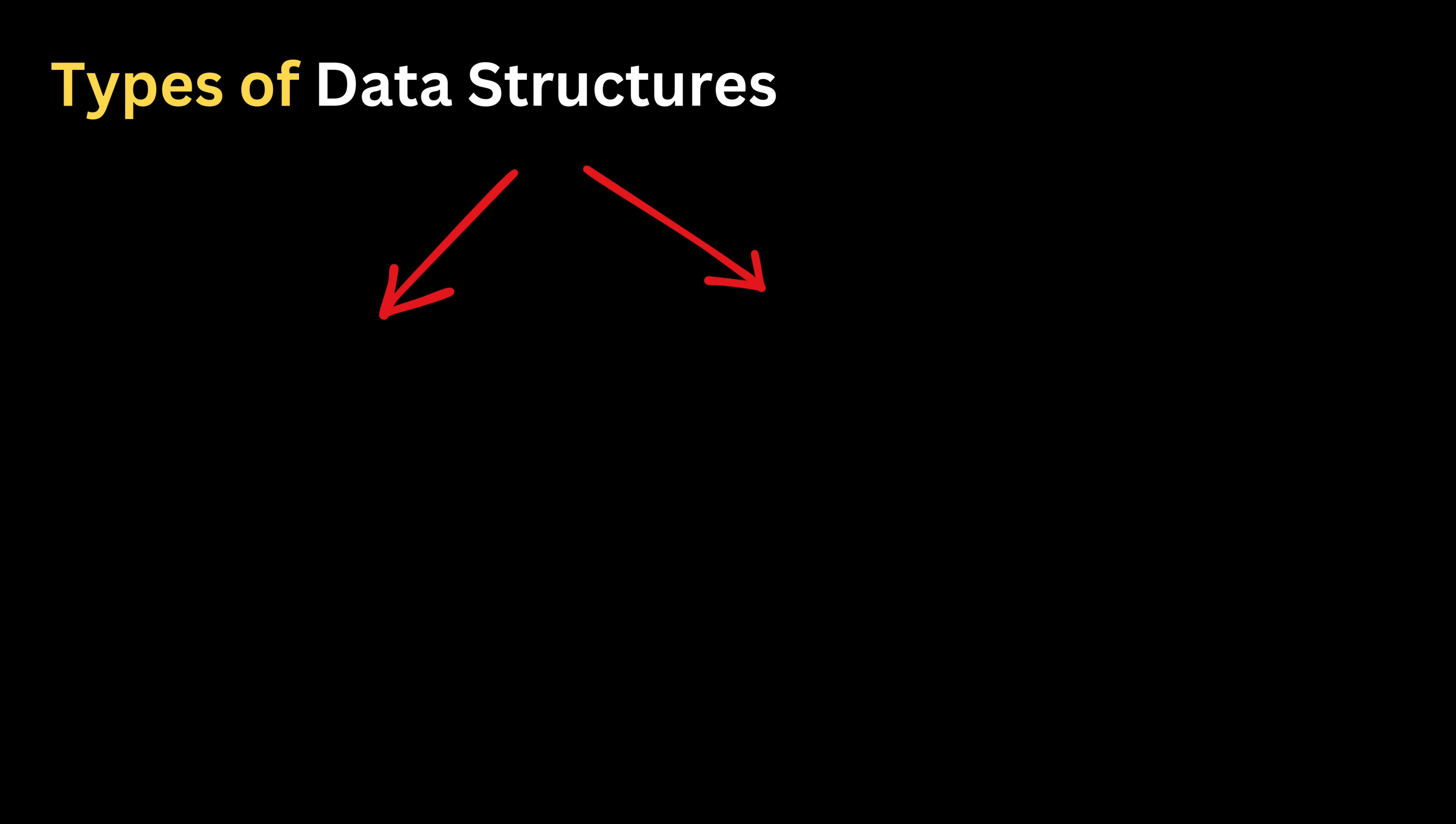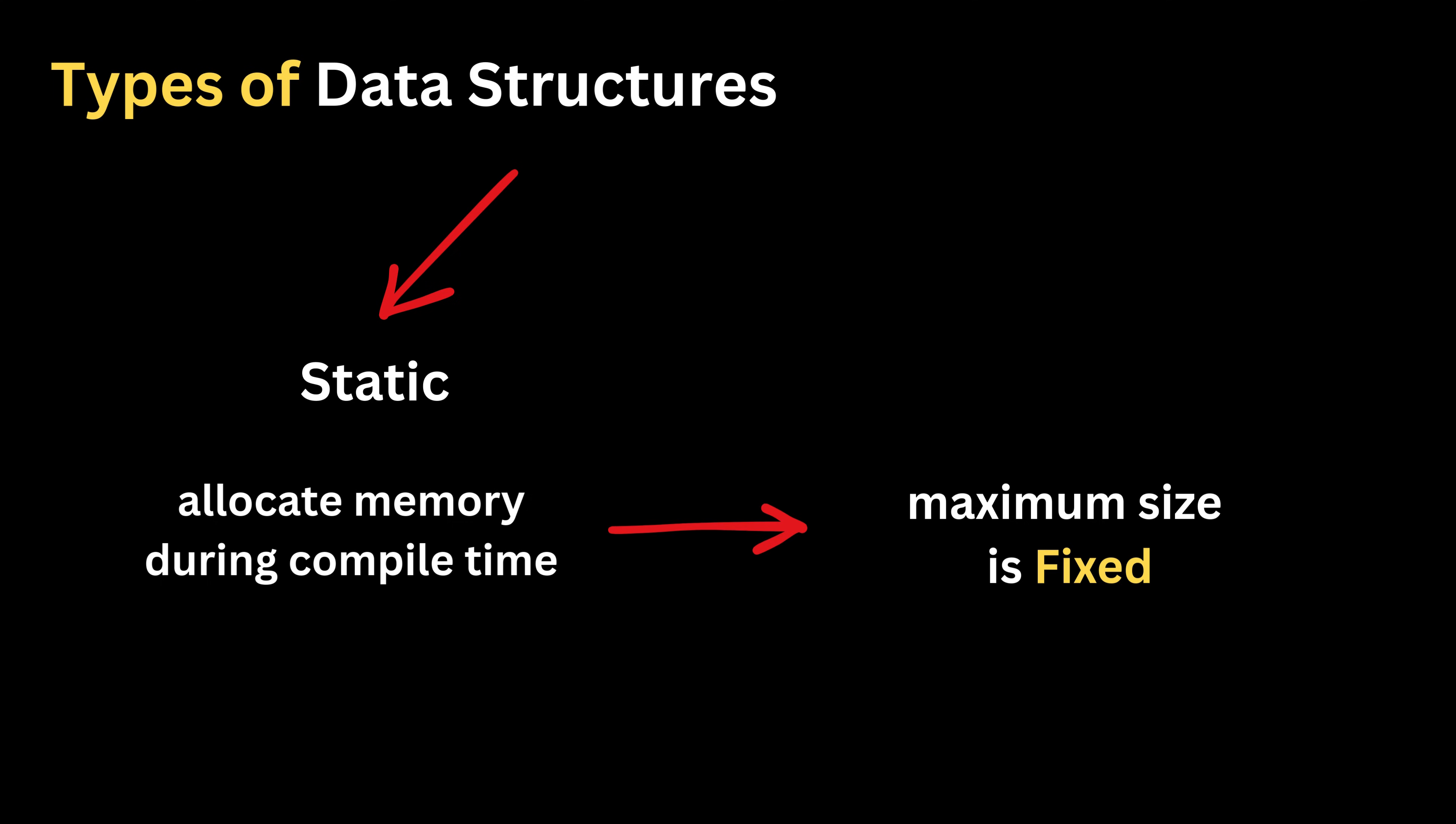Beyond linear and non-linear, data structures can also be grouped into static and dynamic types. Static data structures allocate memory during compile time, meaning their maximum size is fixed from the beginning. The benefit is fast access since the memory layout never changes, but inserting or deleting elements is slower because the structure cannot easily grow or shrink. Arrays fit into this category.